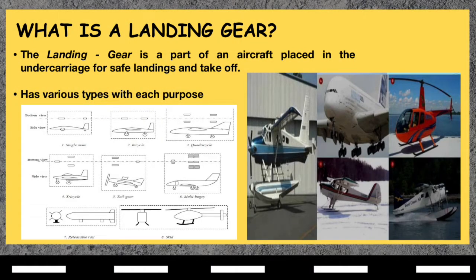The landing gear is a part of an aircraft normally situated in the undercarriage to enable a safe landing and takeoff. There are many types of landing gears with a different set of purposes, usually fit for the purpose of the aircraft it is attached to.